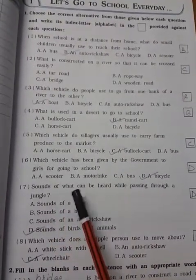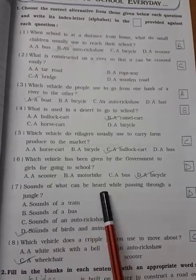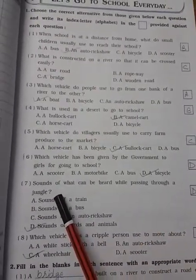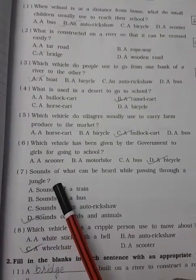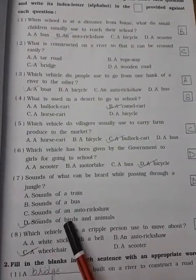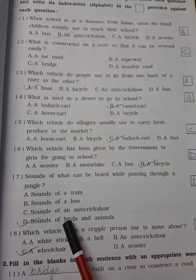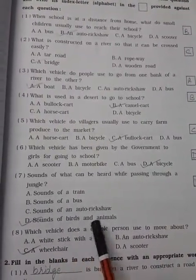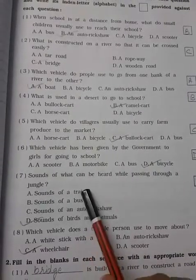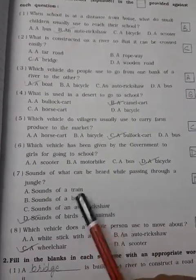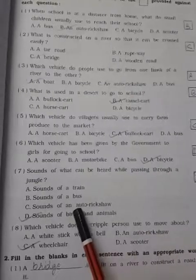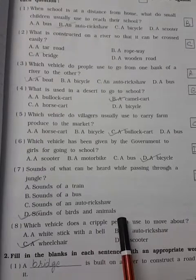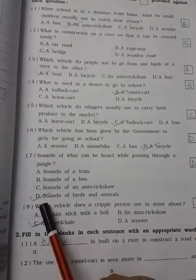Sound of what can be heard while passing through the jungle? You may not be knowing how the jungle sounds. So you can write here sound of birds and animals because no train is passing through jungle, no bus is passing through jungle, and no auto rickshaw is moving in jungle. Only birds and animal sounds. So the answer is D.